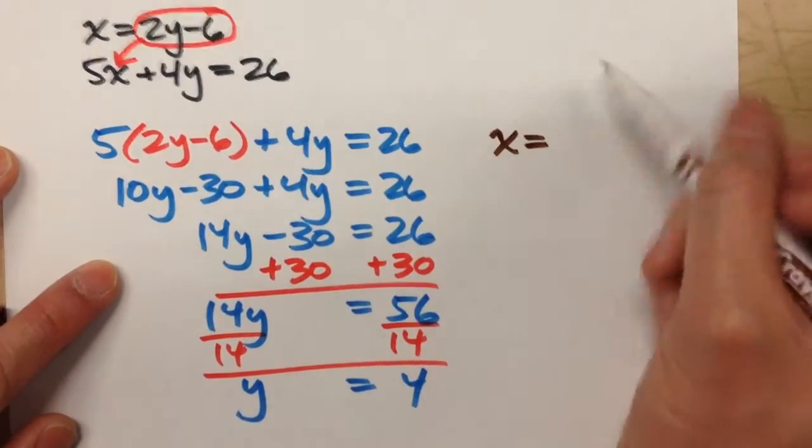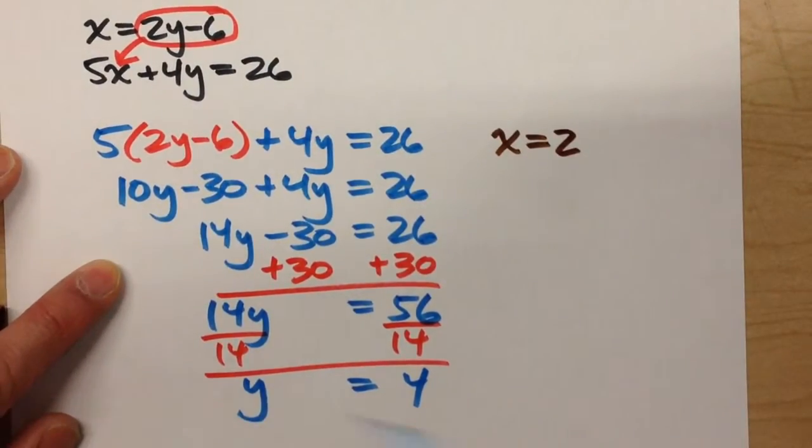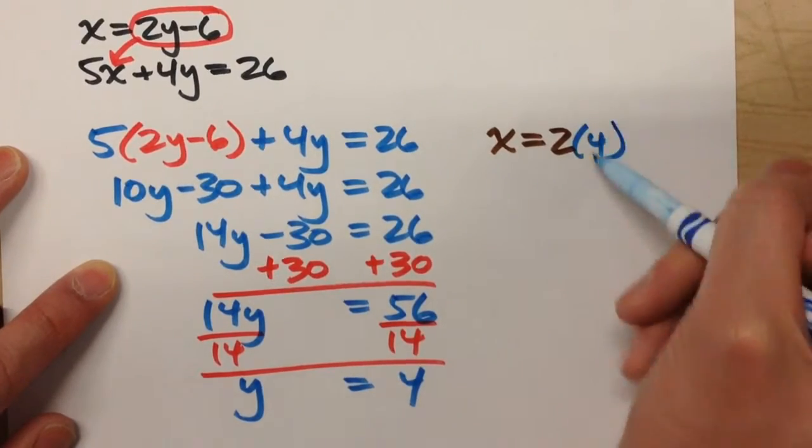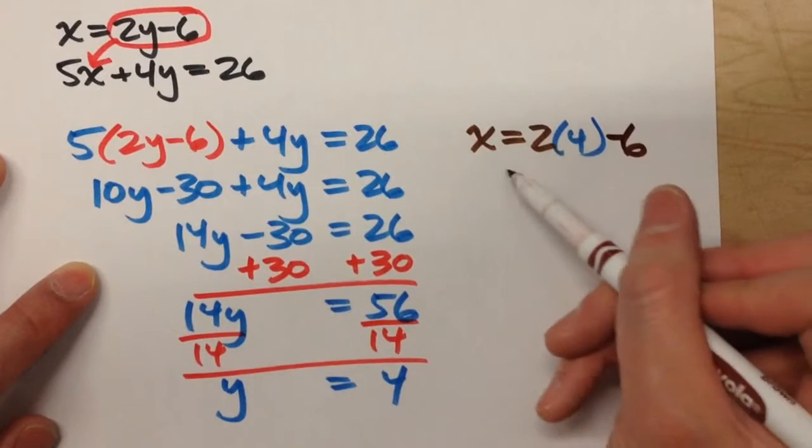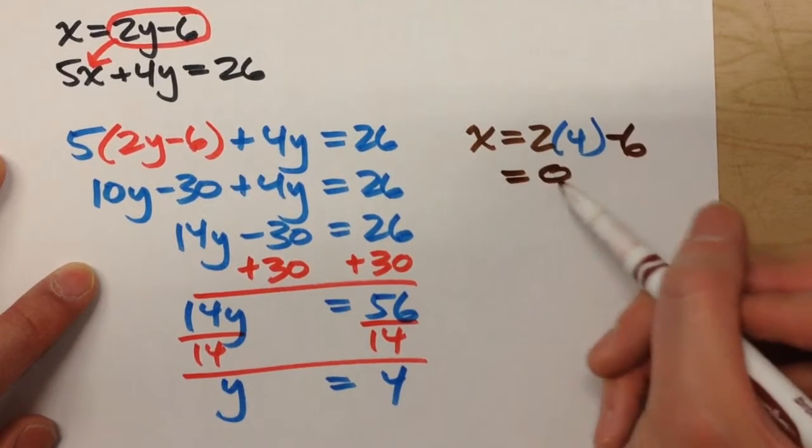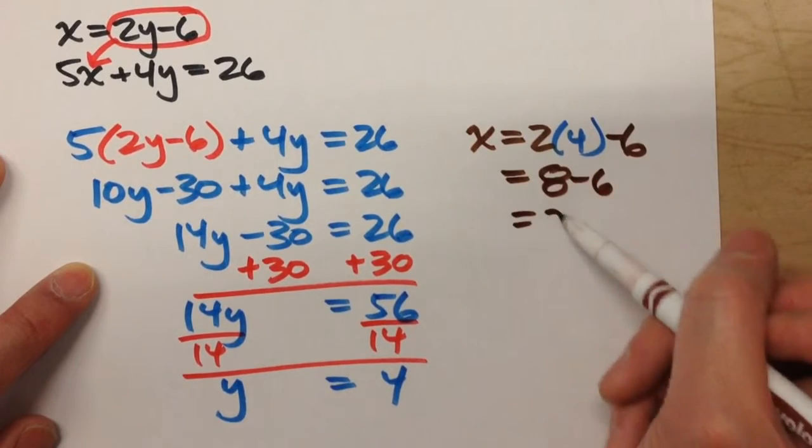x equals 2 times my y value, which is 4, minus 6. So whatever that equals is my x. 2 times 4 is 8, minus 6 is 2.